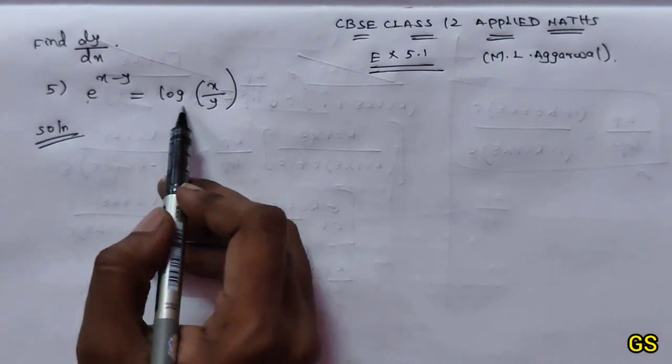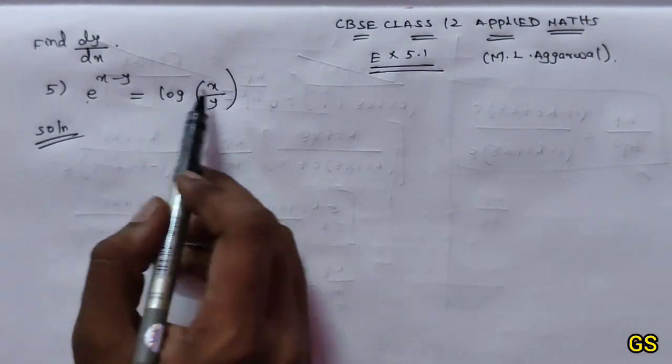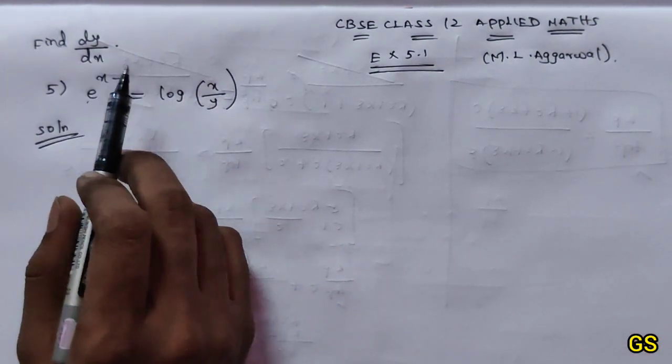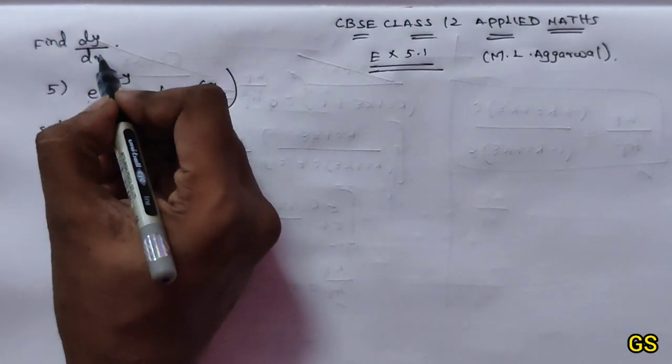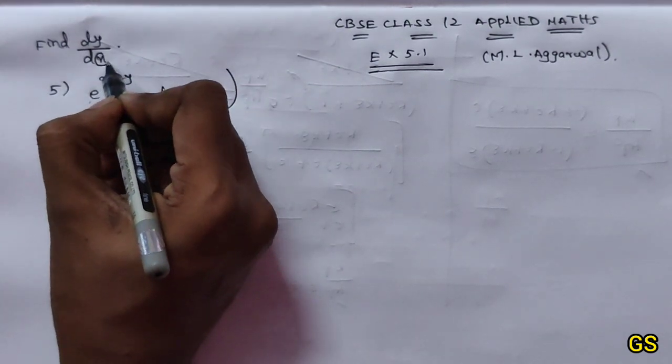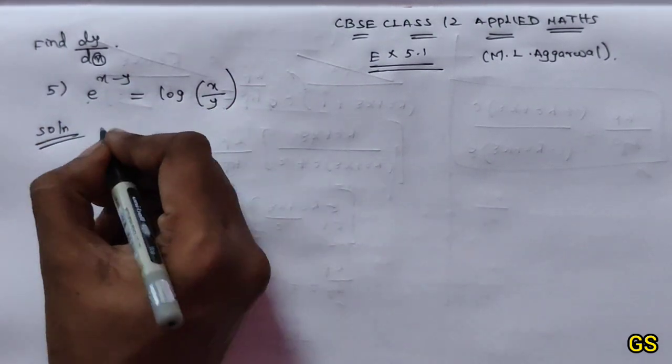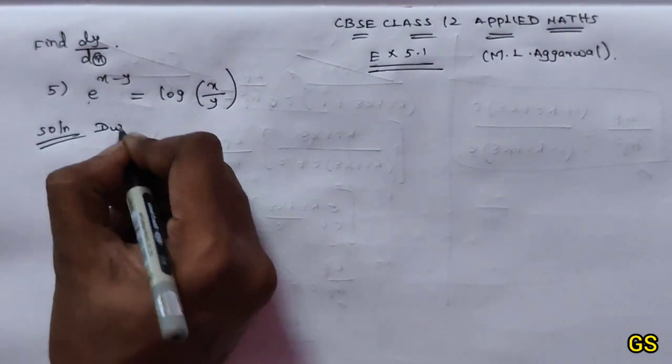So, e power x minus y equals log of x by y. Find dy/dx — differentiate. So y is a function of x, differentiate with respect to x.